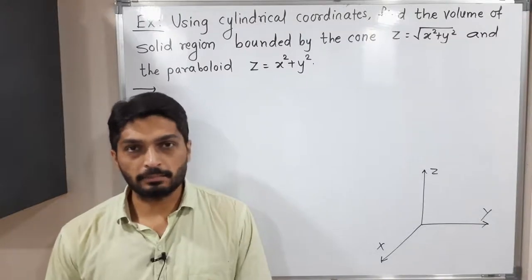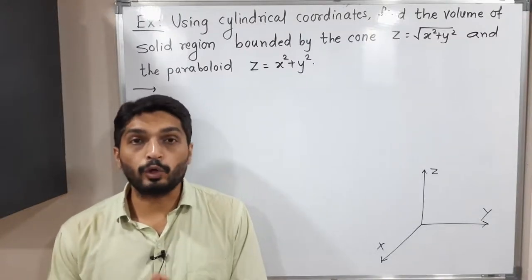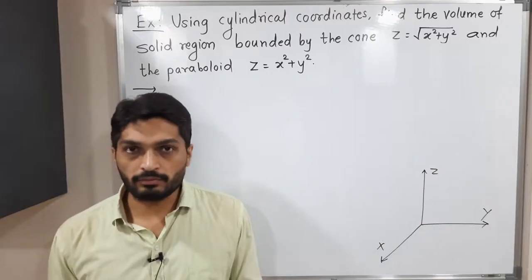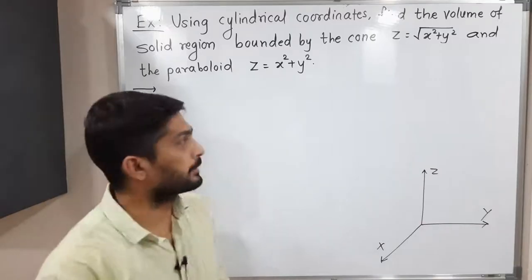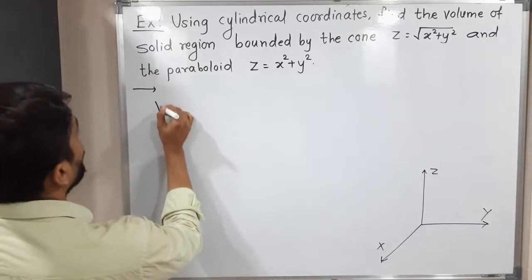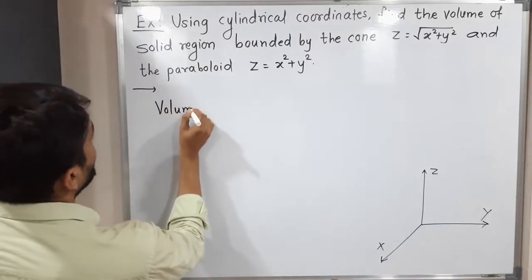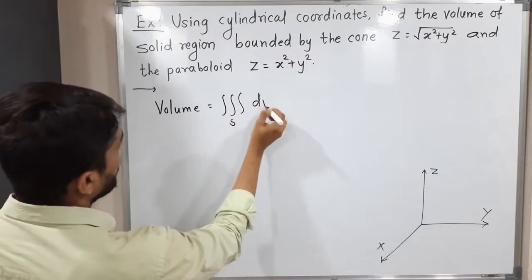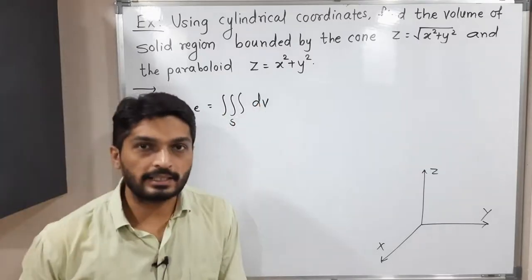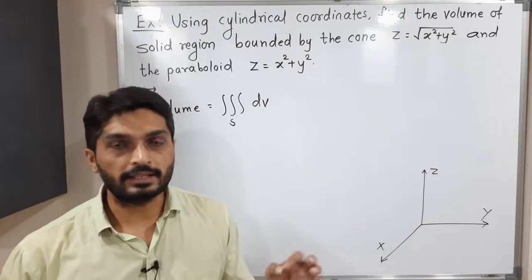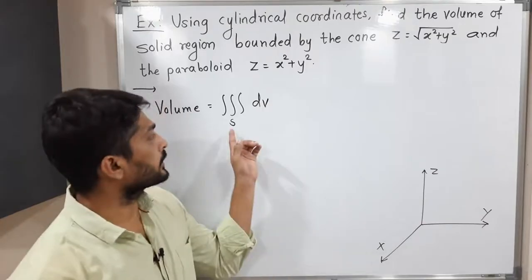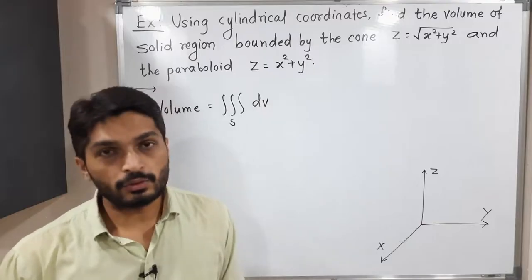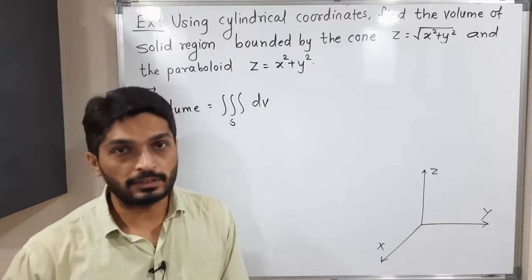Let us discuss this example. In this example we have to find a volume using the cylindrical coordinate system. We are familiar with the formula of volume: Volume is equal to triple integration over S of dV, where dV means dx dy dz or dz dy dx. The most important thing is the solid region S in R3. Let us discuss what is the region given here.